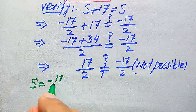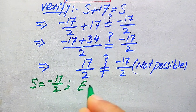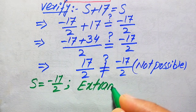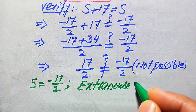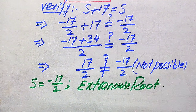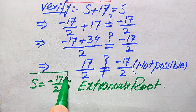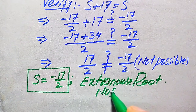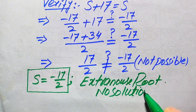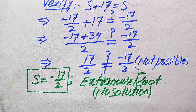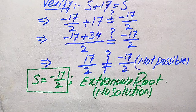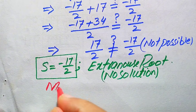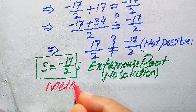Since 17/2 ≠ −17/2, the value s = −17/2 does not satisfy the original equation. We conclude that s = −17/2 is the extraneous root of the given equation. Since we cannot get any other value of s, this question has no solution. That is the final conclusion from method one.